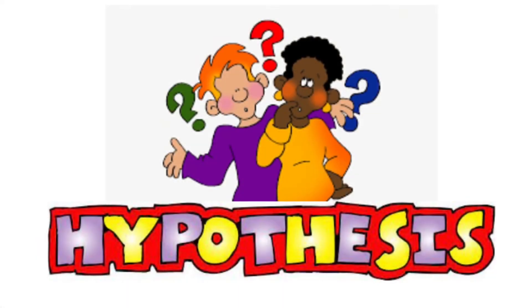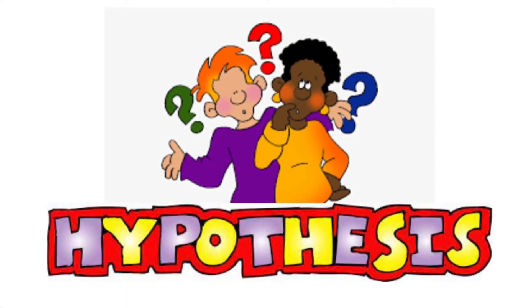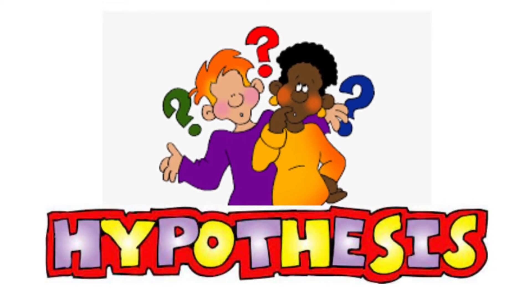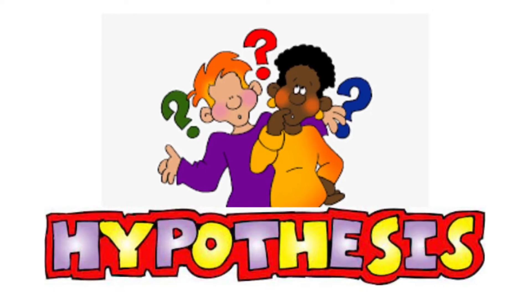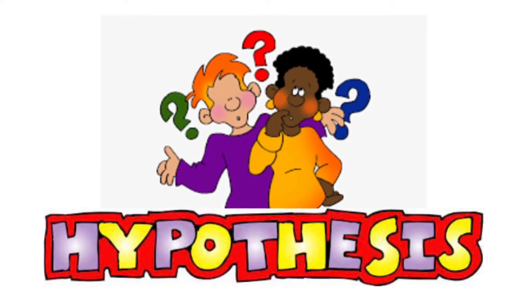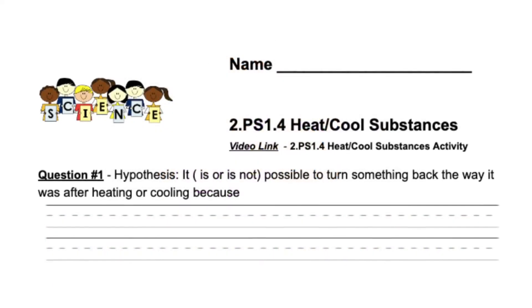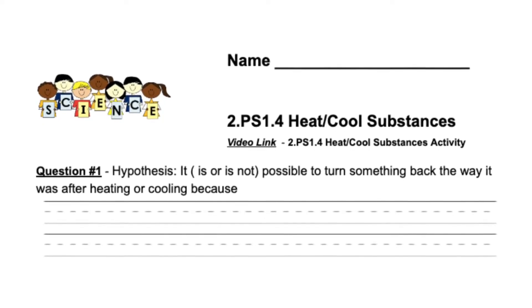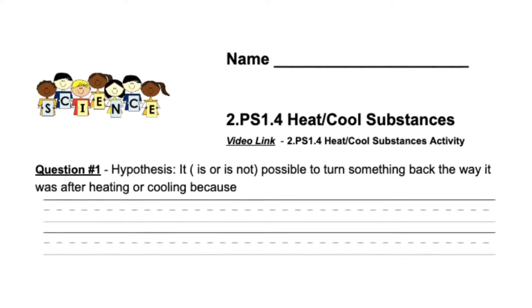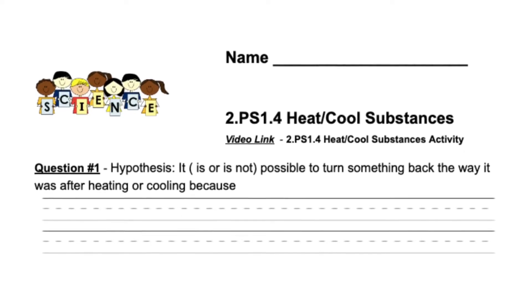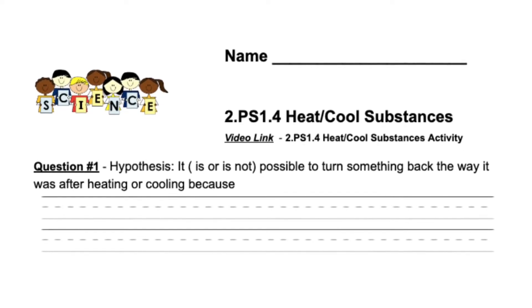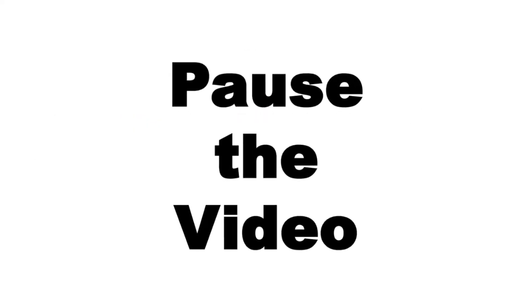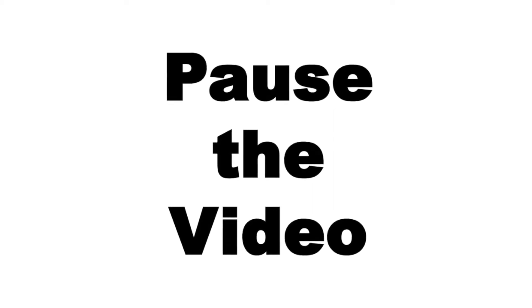Before we can experiment with other things, we need to come up with a hypothesis. Does everybody remember what a hypothesis is? You make a prediction about what you think is going to happen. Look at your worksheet, question number one: Hypothesis — it is or is not possible to turn something back the way it was after heating it or cooling it, because... Pause the video and write your hypothesis. When you're ready, start the video again.